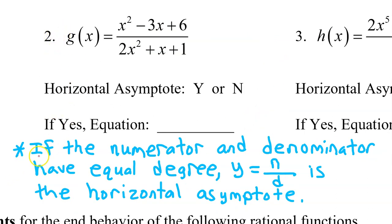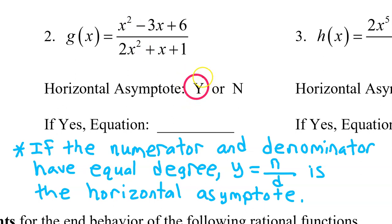Number two — in a previous video, we learned that if the numerator and denominator have equal degree, then y equals n over d is the horizontal asymptote, where n and d represent the leading coefficients of the numerator and the denominator. That's the situation we find ourselves in here: degree two and degree two. The degrees are equal, so yes, there will be a horizontal asymptote, and it will be the ratio of the leading coefficients — that is, 1 divided by 2. So y equals 1 half.